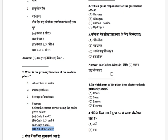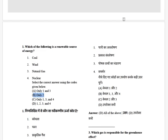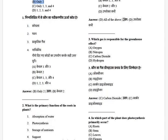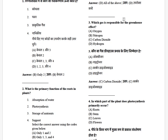Which gas is responsible for the greenhouse effect? The options are: oxygen, nitrogen, carbon dioxide, and hydrogen. The answer is C — that is carbon dioxide.